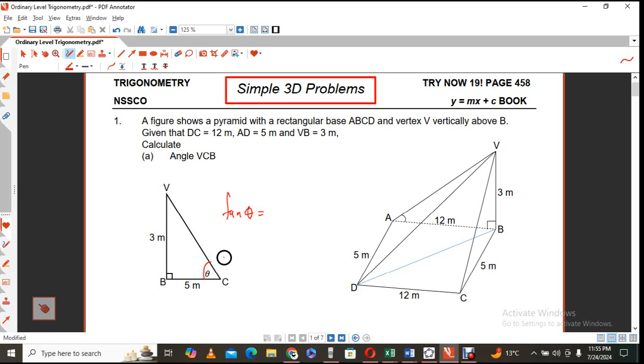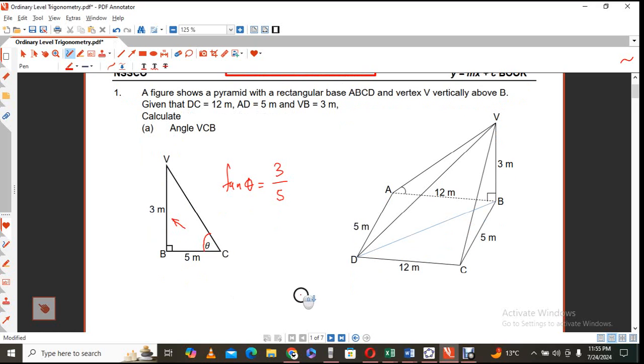So I indicated that angle with theta. And we are going to use the tangent ratio. So I'll just say tan theta. And the tangent is the opposite. In this particular case, the opposite is 3 over the adjacent, which is 5. So we're going to calculate that angle.